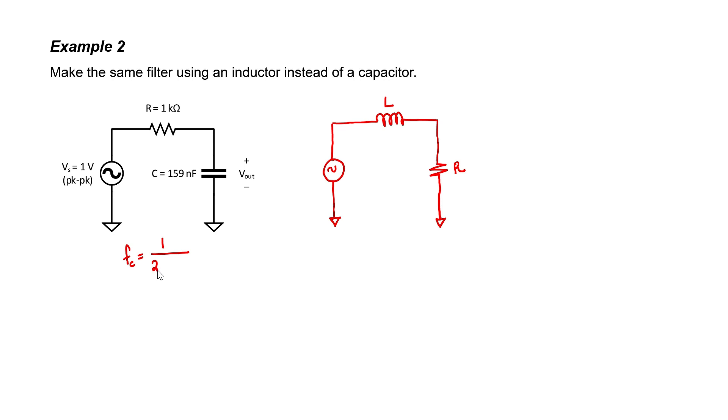With our RC filter over here, the time constant was given by RC. For our LR filter over here, our time constant is given by L divided by R. Therefore, we can easily find the formula for corner frequency.